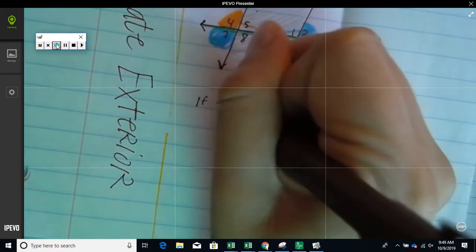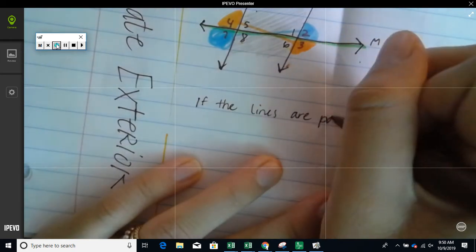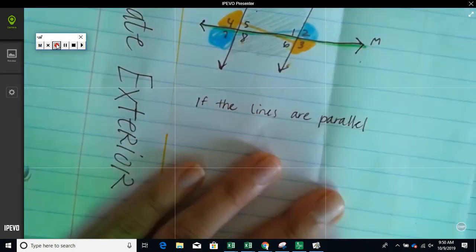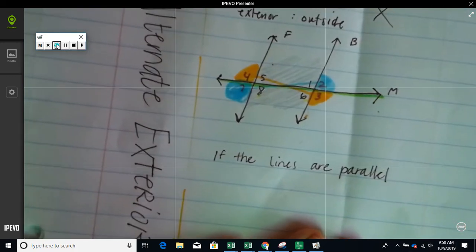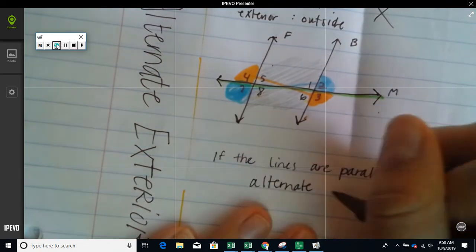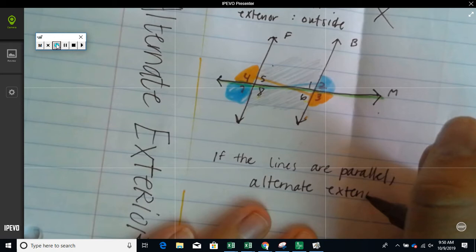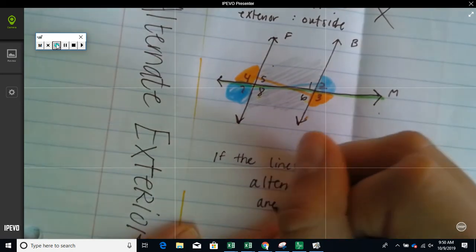If the lines are parallel, alternate exterior angles are congruent.